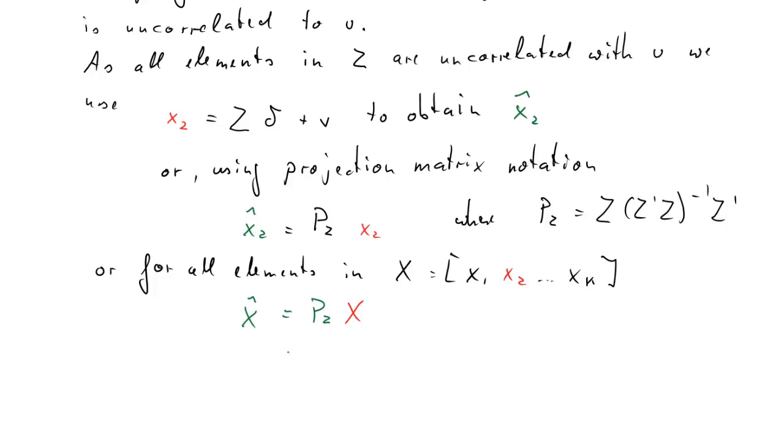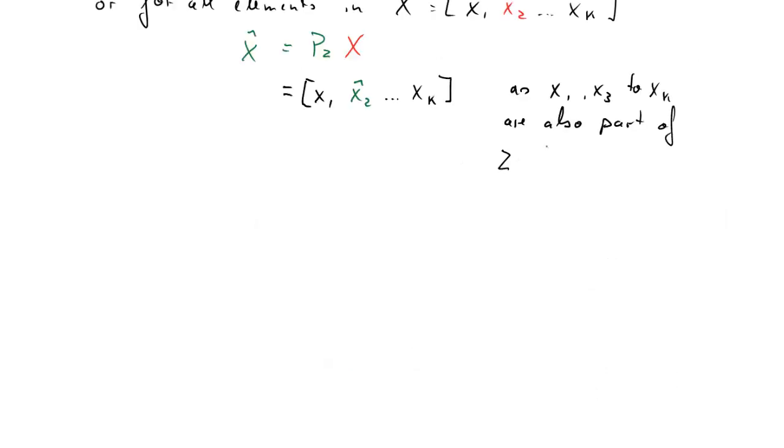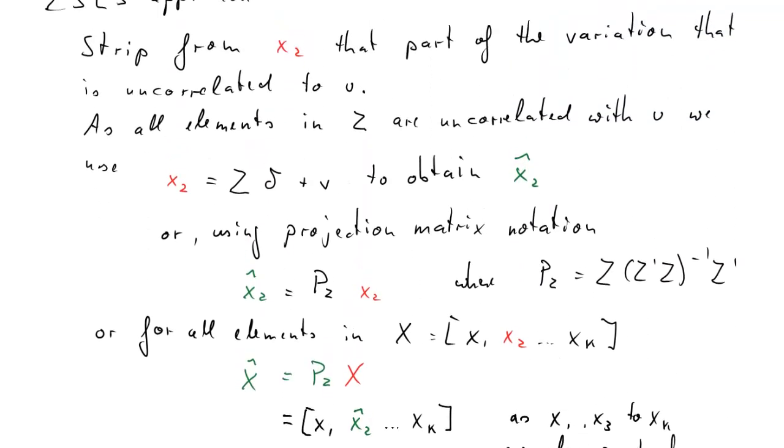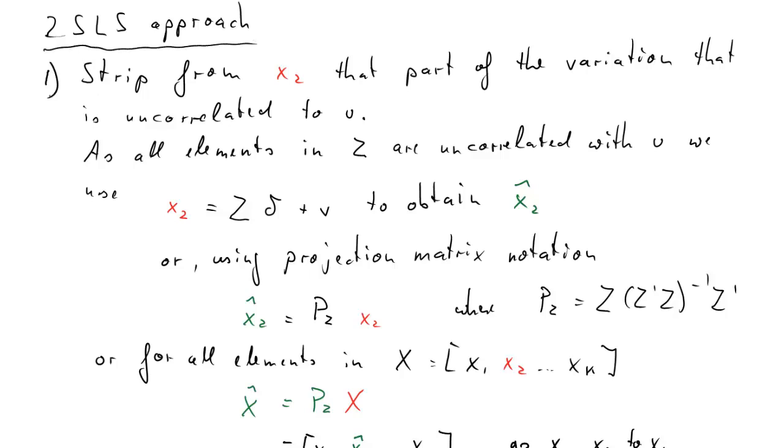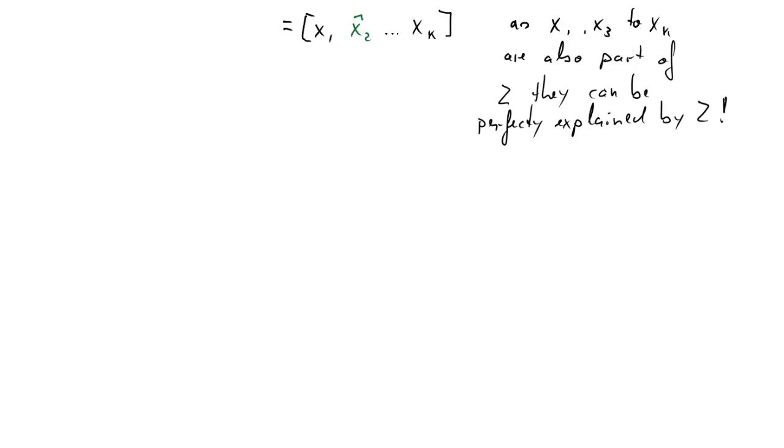So what do we get when we do this? We get k columns for X hat. And it turns out the first column and actually all but the second column will just return the x's again. The second column will return x2 hat as before. Now why do we get just the x's back for all other columns? And that's because all the other x's x1, x3 all the way to xk are part of the Z matrix. So if you are trying to explain x1 with elements in Z, well as Z includes x1 we can perfectly explain variation in x1. So we basically discussed the first step of our two-stage least squares procedure.